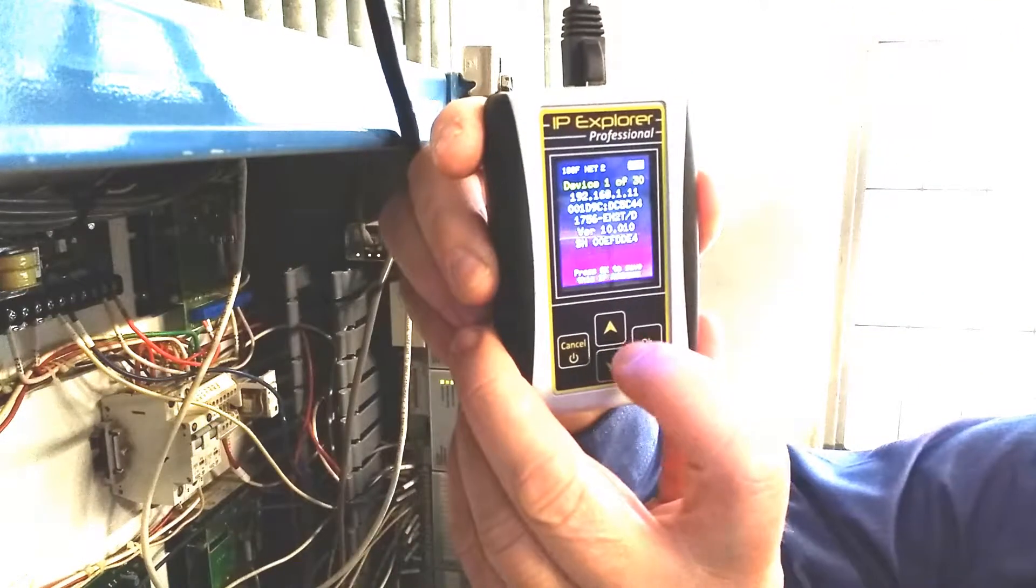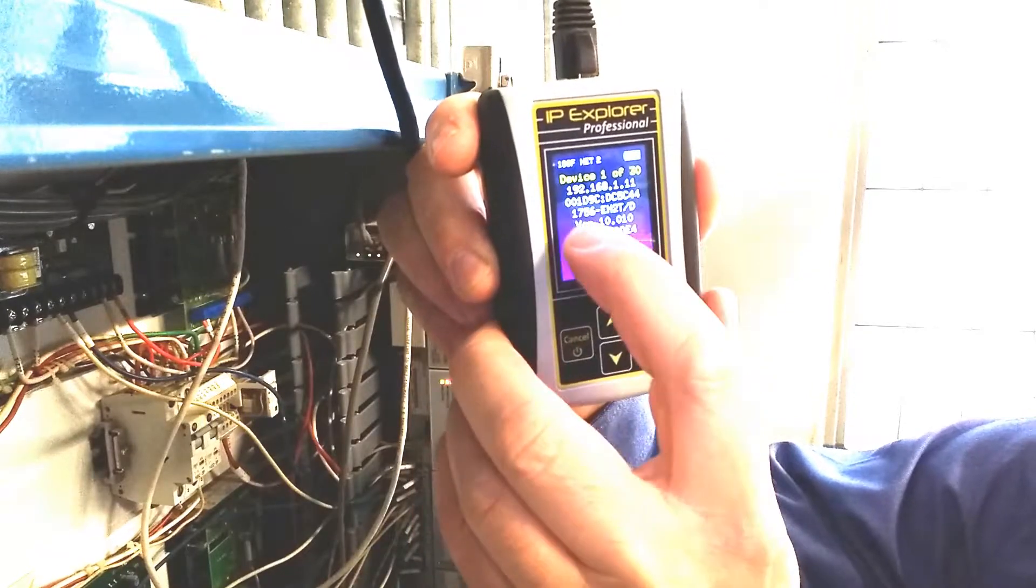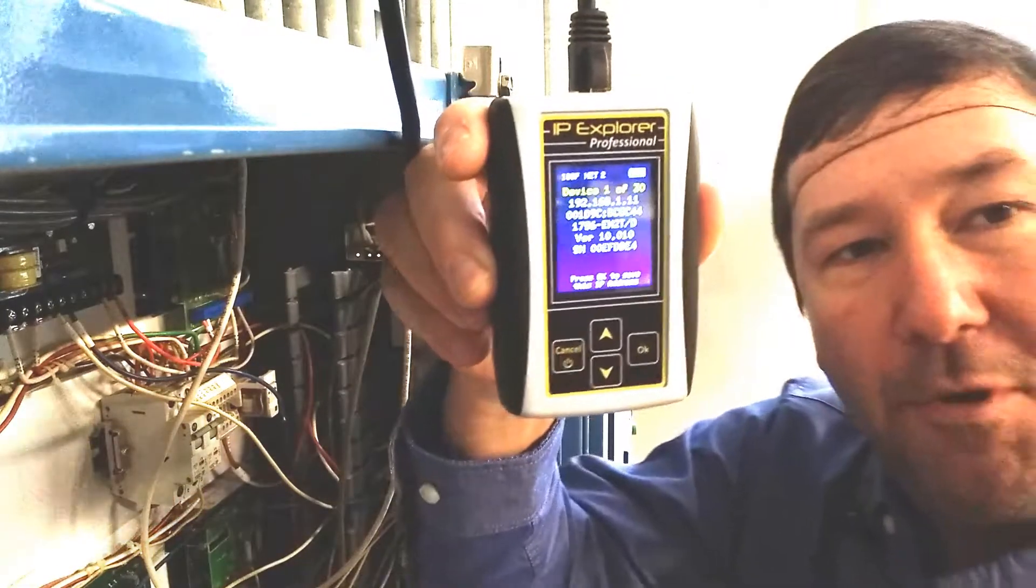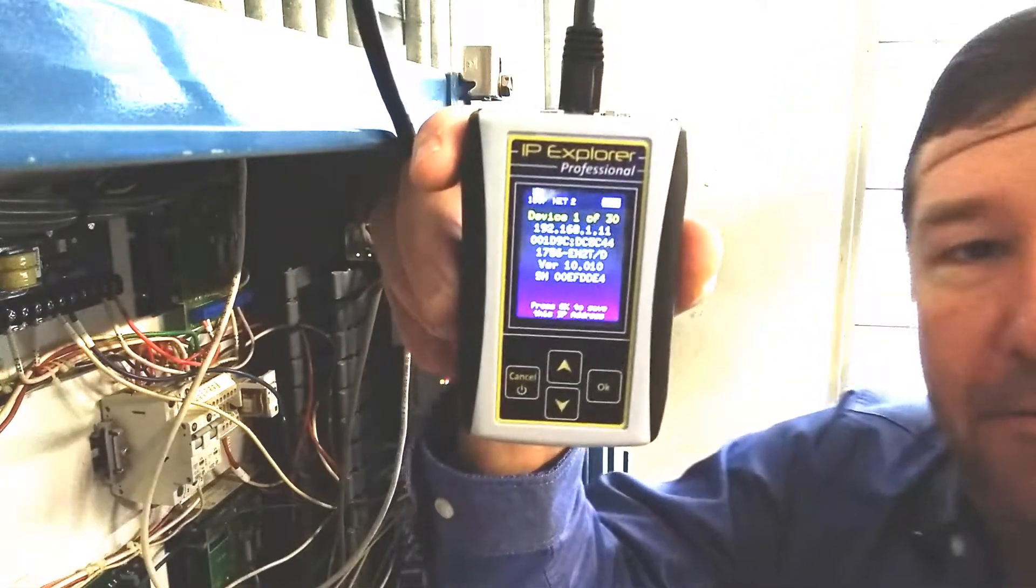and it gives us the IP address, the MAC address, and mainly the model number. And you'll get the model number for any Ethernet IP compliant device.